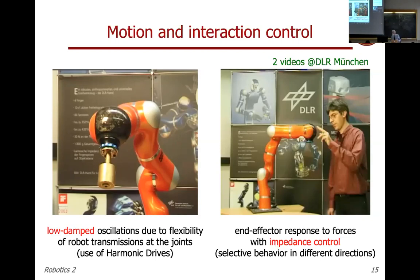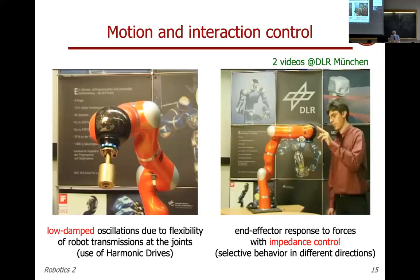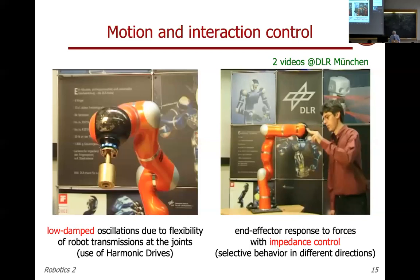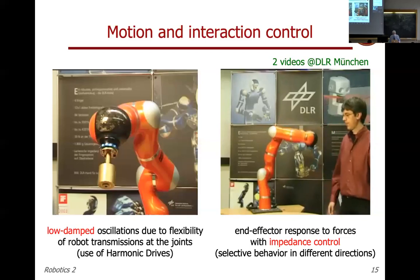On the right-hand side there is an impedance control demo: a human pushes on the end effector and the robot reacts as if it were a mass-spring-damper system. This is the impedance control — we let the interaction between forces and motion be modeled by a target model like a mass oscillating with stiffness and damping. You can set the parameters: large or small mass, large or small damping and stiffness, in various directions.